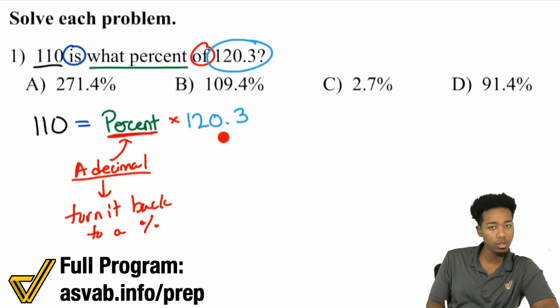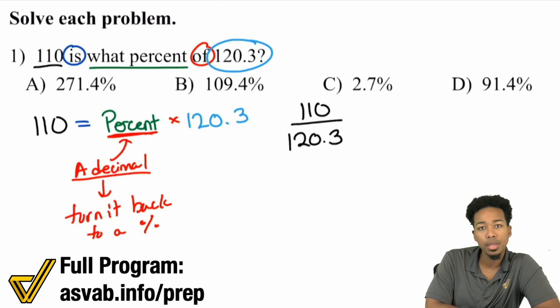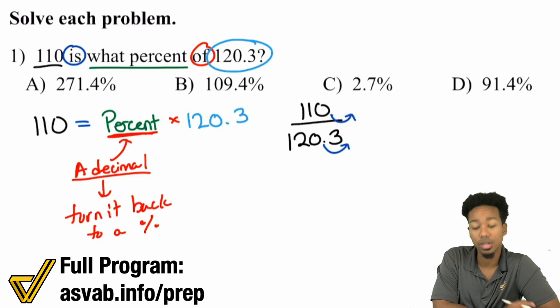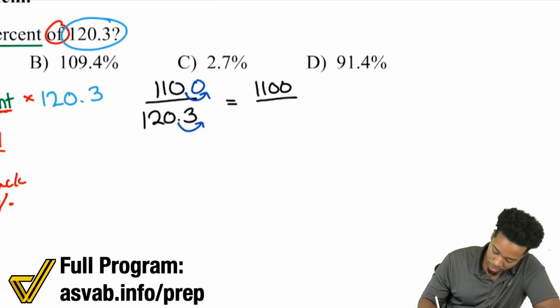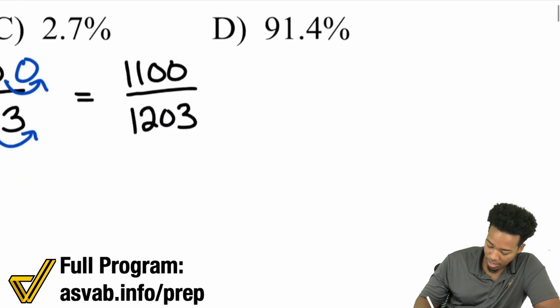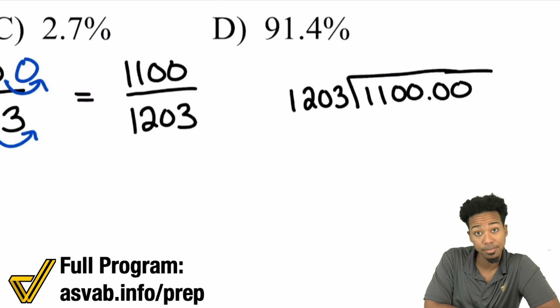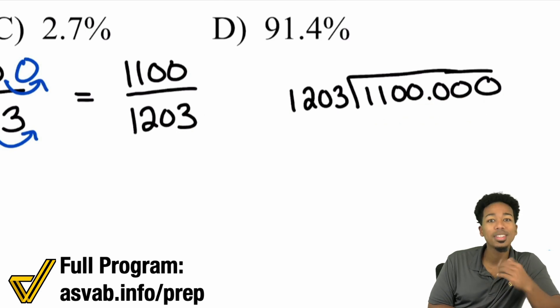We're going to have 110 divided by 120.3. Notice we're dividing by a decimal. I don't like dividing by decimals. So what I'll do is move that decimal place to the right one time. This becomes 1100 divided by 1203. Now we can actually divide. 1203 dividing into 1100, and I'll put some decimals just in case.